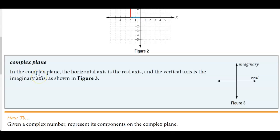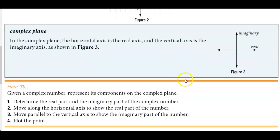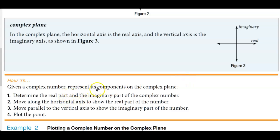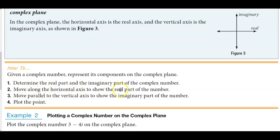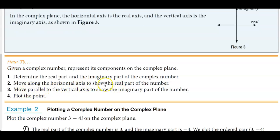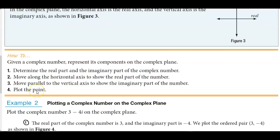In the complex plane, the horizontal axis is the real axis and the vertical axis represents the imaginary axis. To represent a complex number's components on the complex plane: first, determine the real part and the imaginary part. Second, move along the horizontal axis to show the real part. Third, move parallel to the vertical axis to show the imaginary part. Fourth, plot the point.